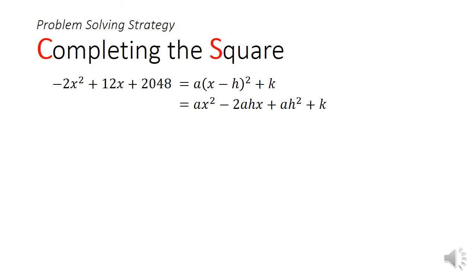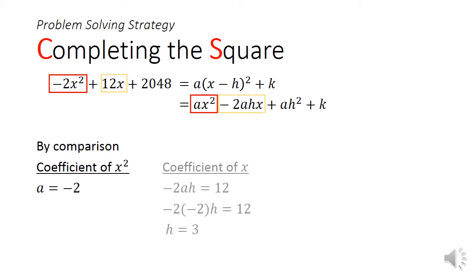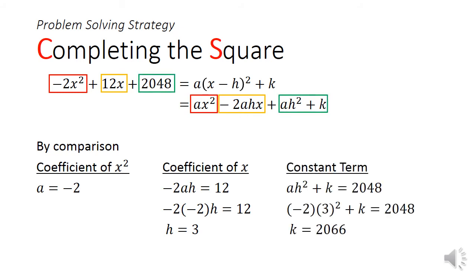Now we begin the process of completing the square. By comparison, when we look at the coefficient of x square, we will get a equals to negative 2. When we compare the x terms, we will get h equals to 3. And by comparing the constant terms, you will get a k equals to 2066.